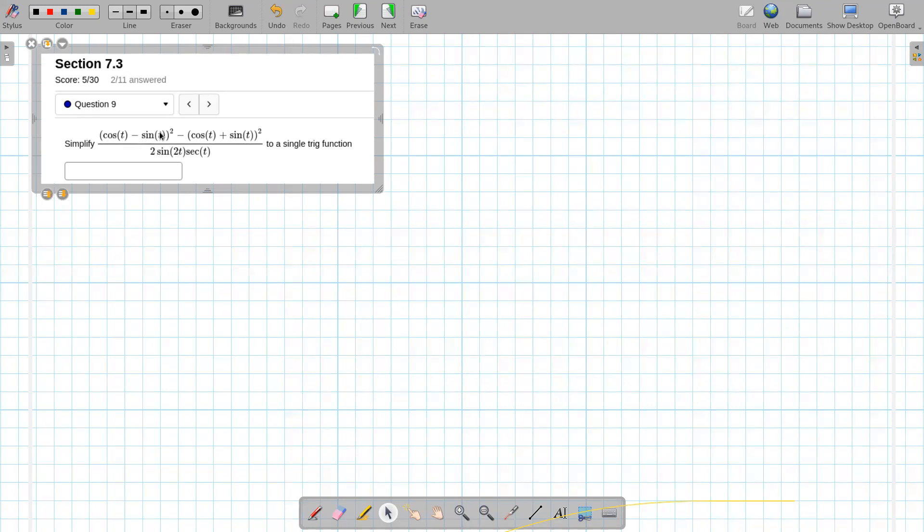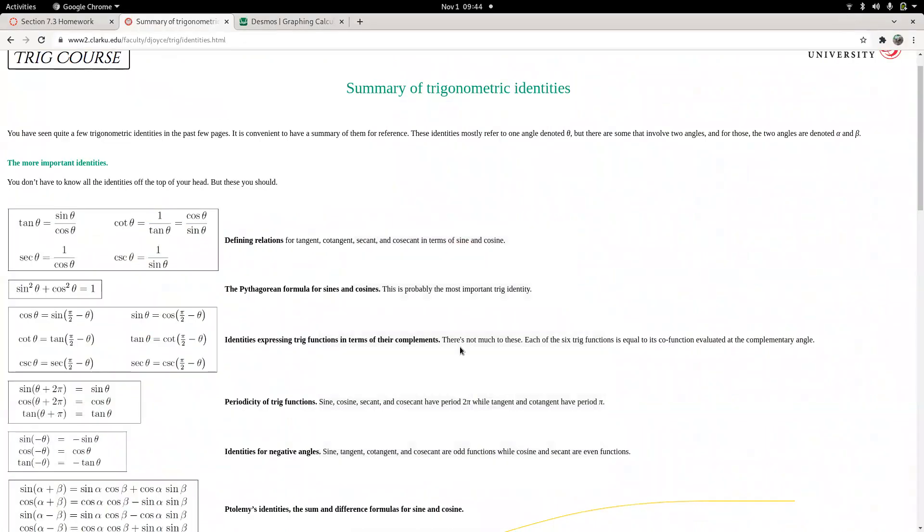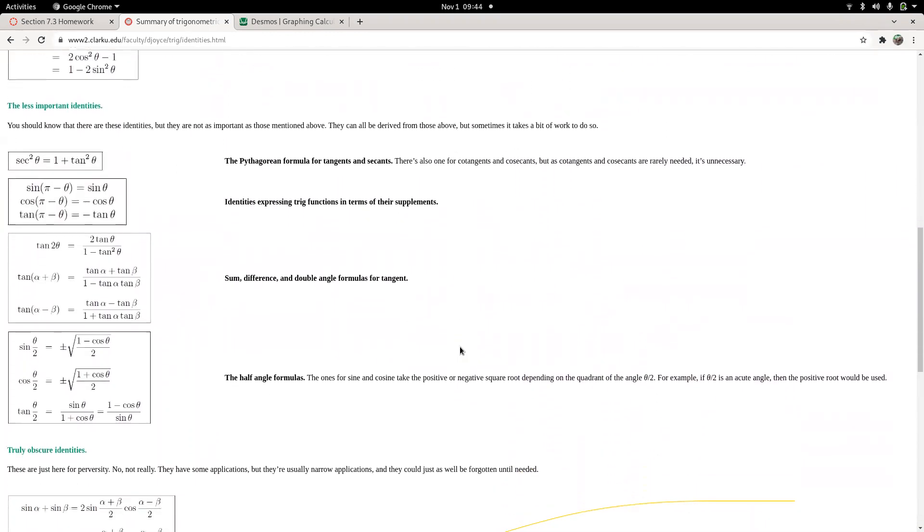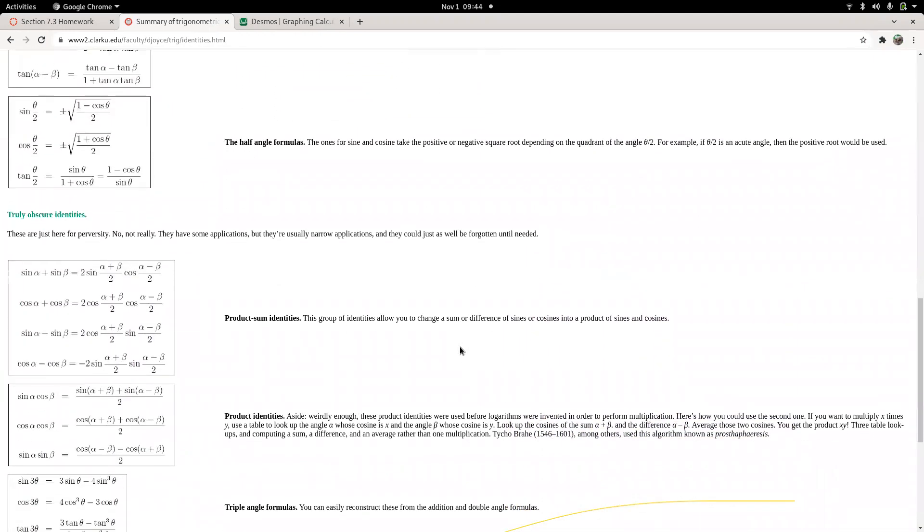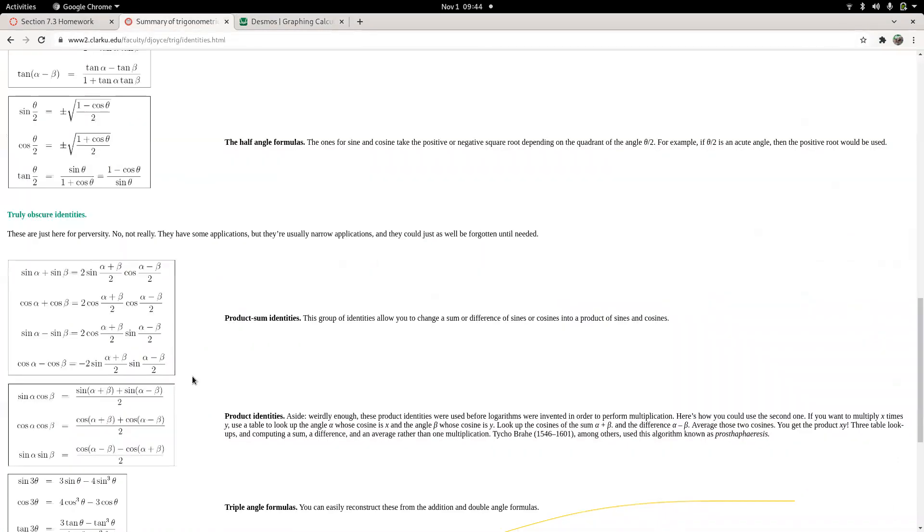Our options for the numerator are either carry out these squares and see what happens, and I'm tempted to do that. The other option is the angle, the difference to angle or sum to angle, which was from section 7.2. We have sine minus cosine and sine plus cosine, right? Cosine minus sine and cosine plus sine. They don't list those here.